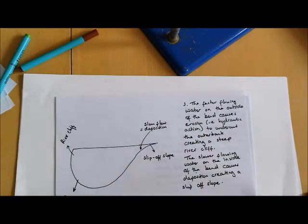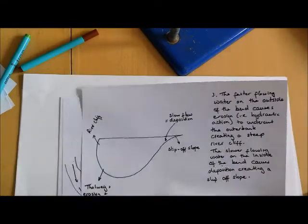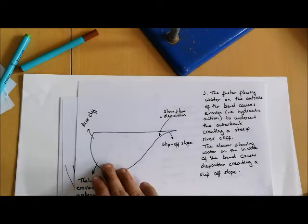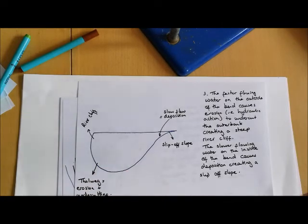Now what that does is it creates a system in which we have faster flowing water, that thalweg being forced to the outside of the bend, causing erosion, predominantly by hydraulic action, that fast flow being forced into the outer bank of the bend. That causes high amounts of erosion, which creates a very deep channel and undercuts the outer bank, creating like a concave shape to it. We call that steep outer bank the river cliff, and it's highly vulnerable to the potential risk of collapse.